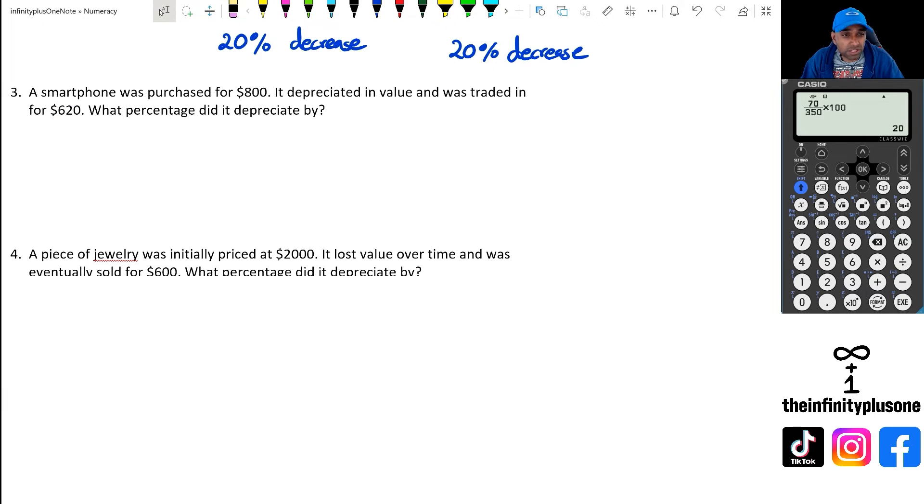As for question three, we've got a smartphone that was purchased for $800 and sold for $620. So we're going to do the quick method. We're going to go 620 and divide it by 800. And as you can see, when we do this, we are actually ending up with 0.775. Now, 0.775 is actually 77.5%. So the smartphone's value is 77.5% of its original value, which means it's reduced by 22.5%. To do this, we're going to go 100 minus 77.5%. So when we do this, we are going to end up with 22.5% decrease.